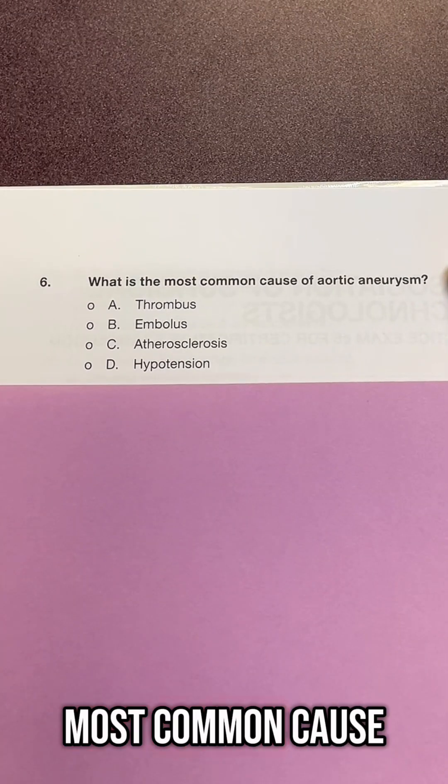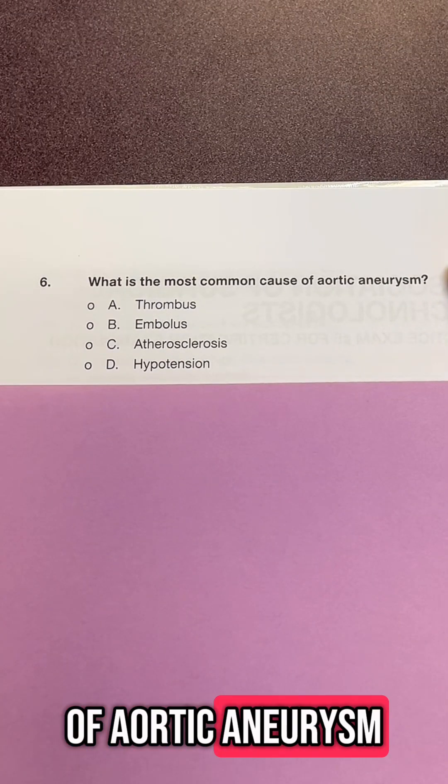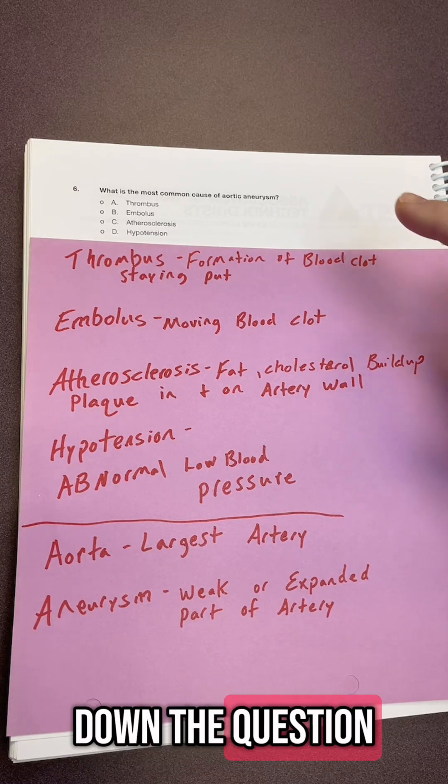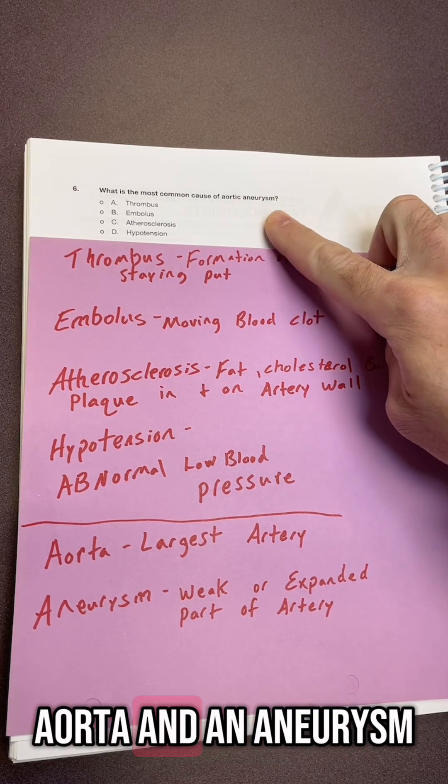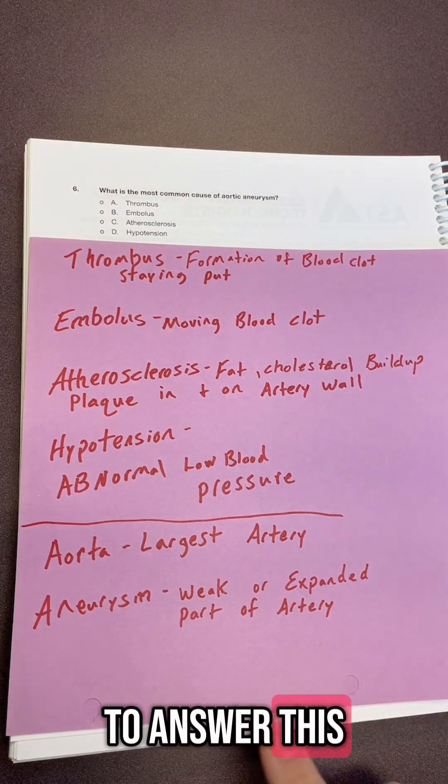So number six, what is the most common cause of aortic aneurysm? So let's break down the question. What is an aorta and an aneurysm? That would be good to know to answer this.